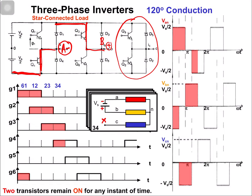From the equivalent circuit, van = -Vs/2, vbn = +Vs/2, and vcn = 0 at that instant. This is shown on the diagram.